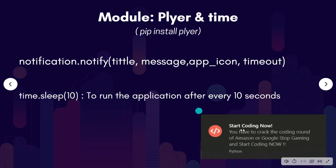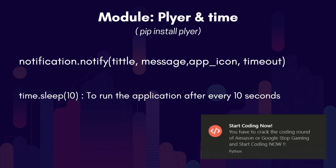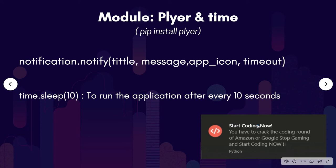The title is basically going to be the notification title, and the message will be this short text. Then app icon will be the icon file. And timeout is the time we want to display the message for — like we want this notification to be present on the desktop for 5 seconds.